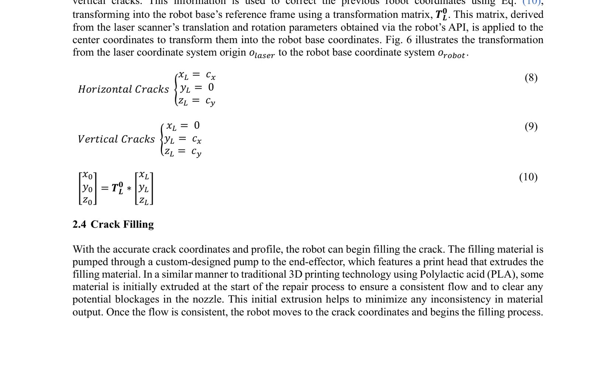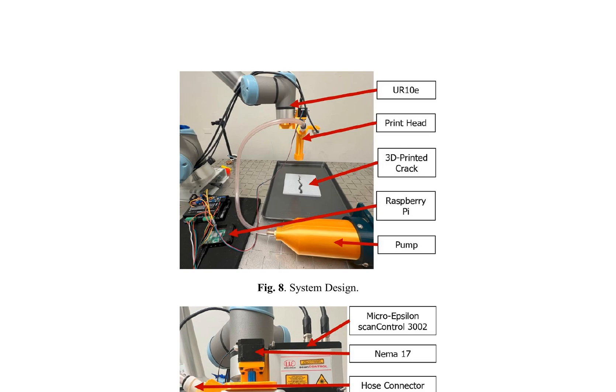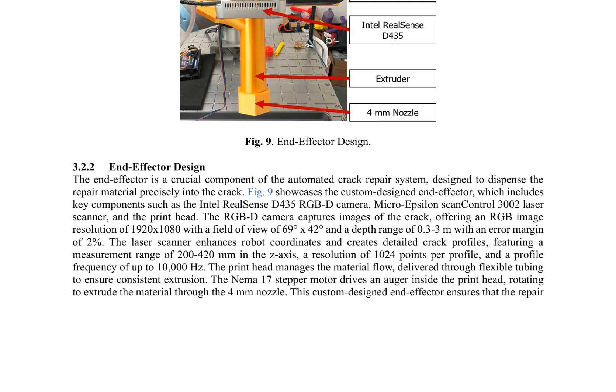The robot's speed is adjusted based on crack cross-sectional area for efficient filling. A validation process assesses the effectiveness of the repair through post-fill scans and calculates the absolute normalized difference between pre-fill and post-fill profiles. The paper also describes the simulation and experimental setup, including the use of RoboDK for simulation and the physical implementation of the system with a Universal Robots UR10E robotic arm, focusing on system design and end-effector functionality.